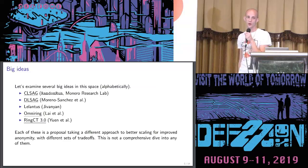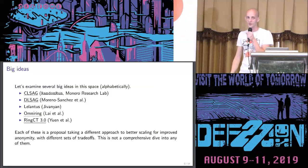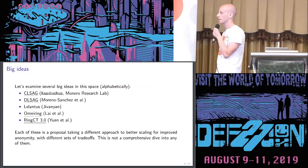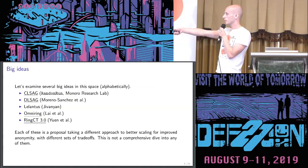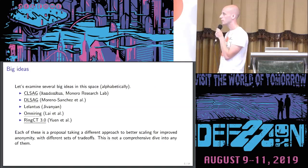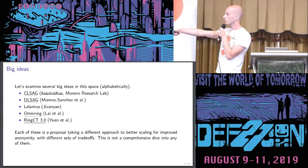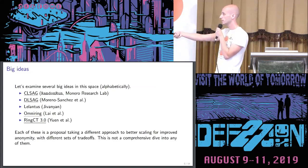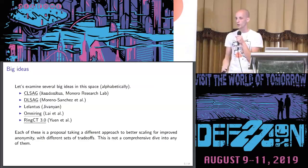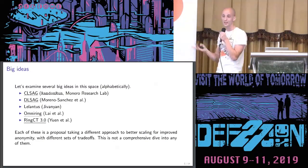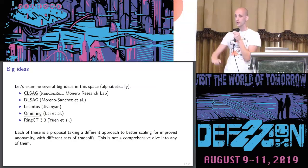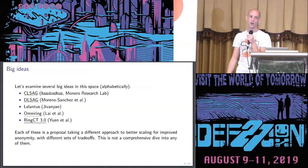Let's look at several big ideas that have been floating around. I often get asked about things I see in the news but am not sure what they are or why we are or are not using them. Let's go through them alphabetically. One is called CLSAG, partially developed in-house — RandomRun was the one who came up with it. DLSAG is one we've been working on with Pedro Moreno-Sanchez and other collaborators. And several others: Lelantus, OmniRing, and RingCT 3.0. Each takes a different approach toward better scaling with improved anonymity, but with different sets of tradeoffs.